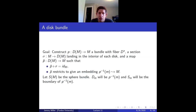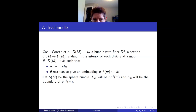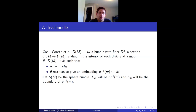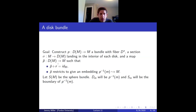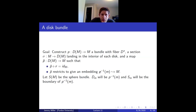We want to construct a bundle D_M with fibers D^n, coming with a section landing in the interior of each disk, and a map p-tilde such that the section composed with p-tilde is the identity, and p-tilde restricted to each fiber gives an embedding. The section tells you which abstract disk maps to an actual disk in M containing a given point—this makes rigorous the notion of a continuously varying family of disks.